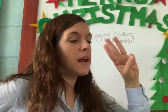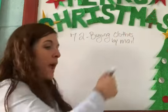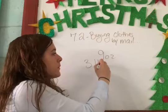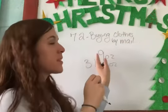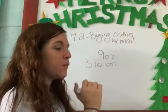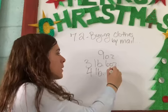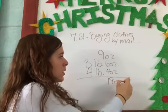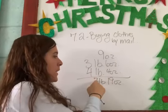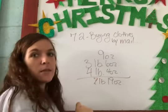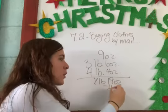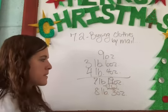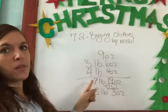Elaine Benson ordered three items by mail. The shipping weights were nine ounces, three pounds six ounces, and four pounds four ounces. Watch how I put them up there because nine ounces is almost like a decimal point for pounds. Then you add them up. Nine plus six is 15, fifteen plus four is 19. Three pounds and four pounds is seven pounds. However, you can't have 19 ounces because there are 16 ounces in a pound. So you go 19 minus 16 is three ounces, and you add that 16 ounces over here as one pound.